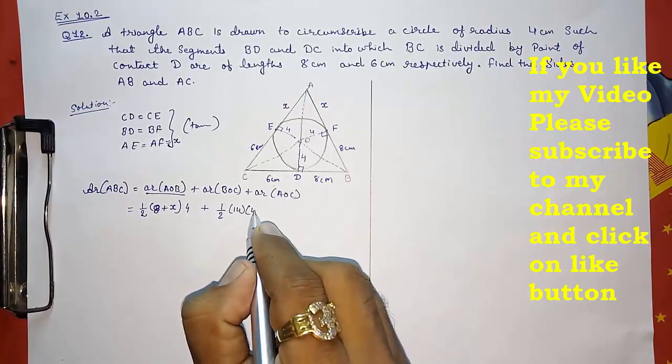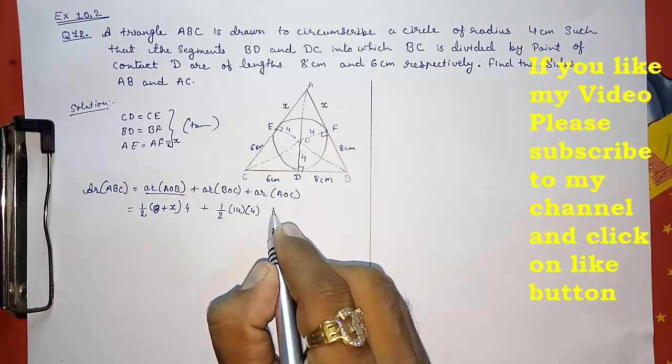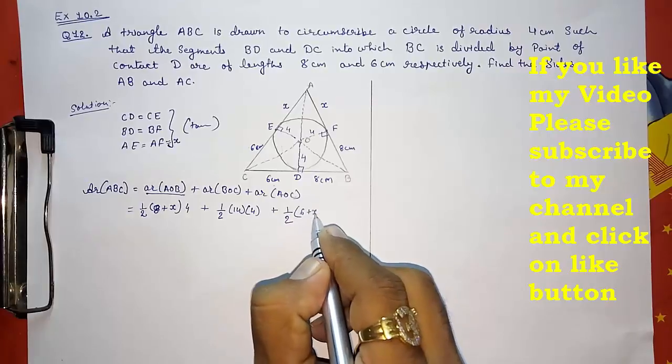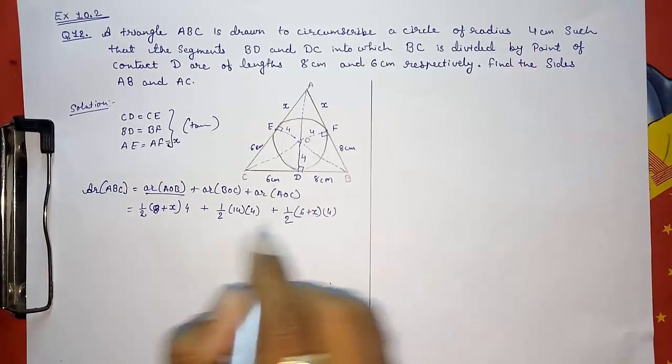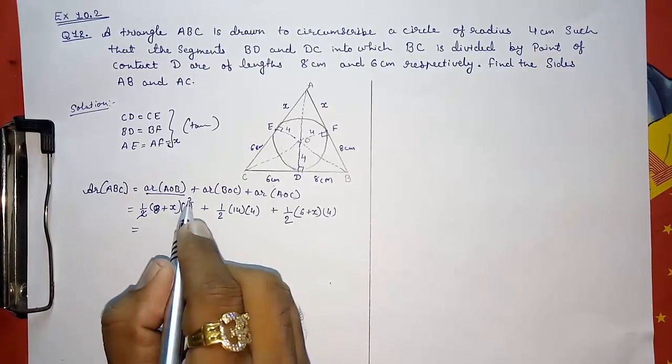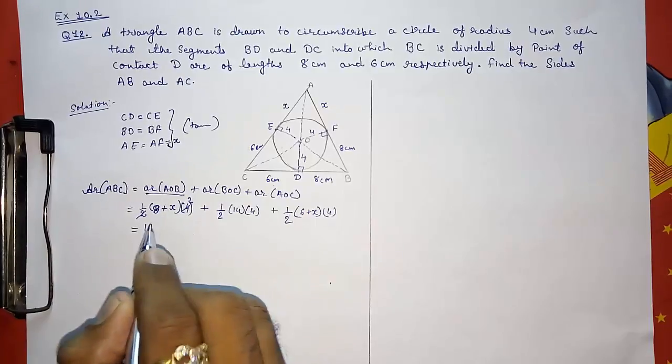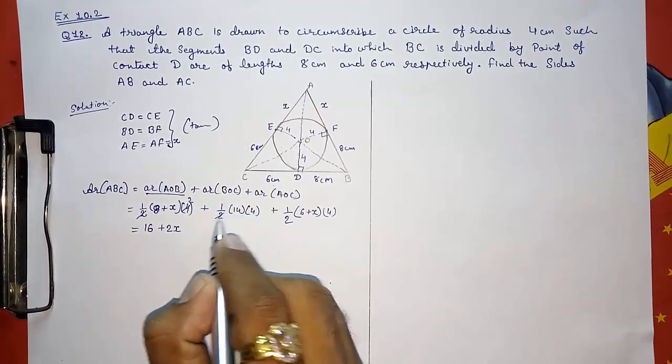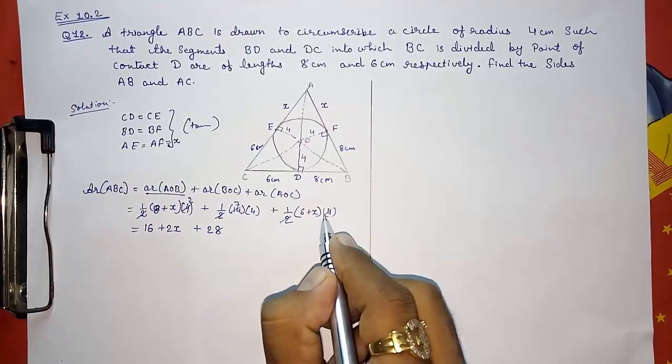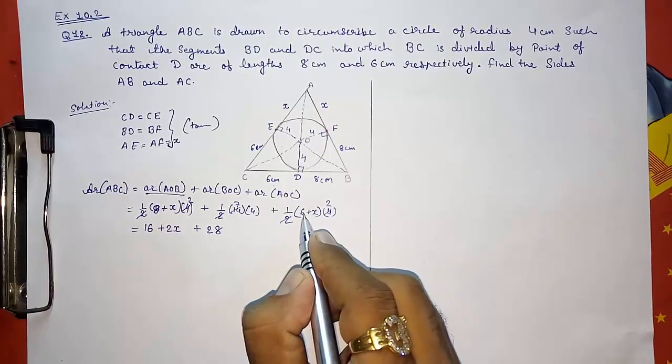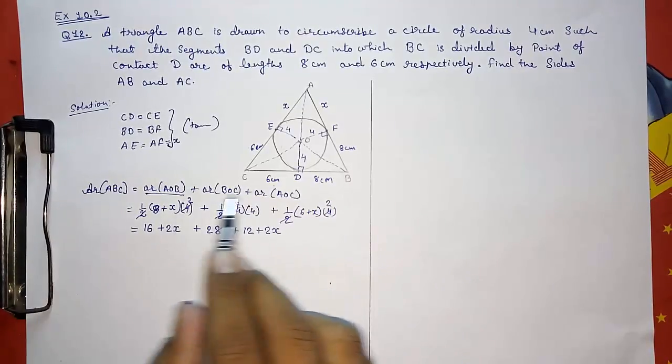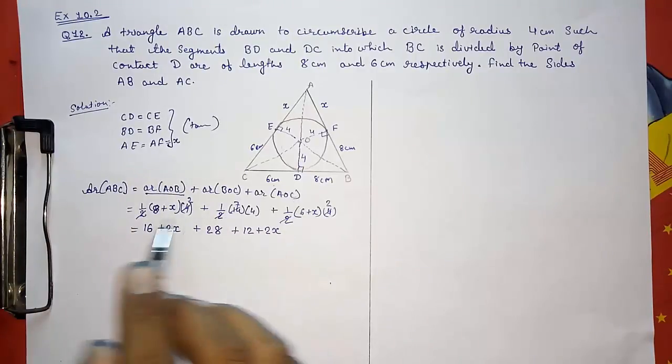Plus for BOC: half, and the base will be 8 plus 6 is 14, and the height will be 4. For AOC again half, and base that is 6 plus X, and height that is 4. Now we can cancel. Look here: 2 ones and 2 twos, so this 2. So it will be 2 into 8 is 16, 2 into X is 2X. Again here we can cancel it: 7, 7 fours are 28. Again we can cancel this 2 and this 2: so 2 times 6 is 12, and 2 into X is 2X.